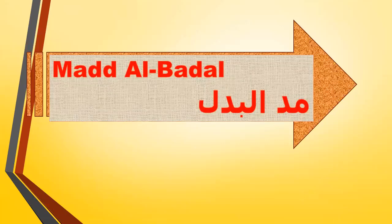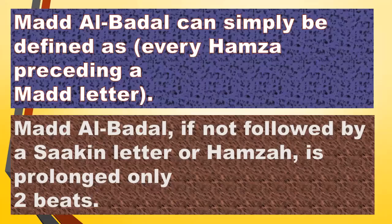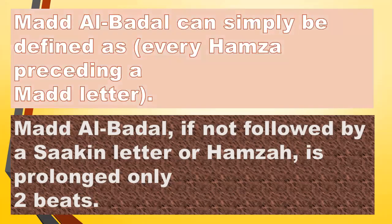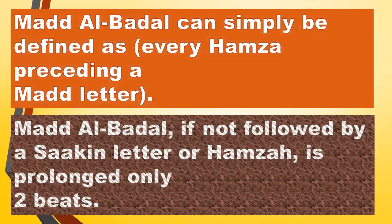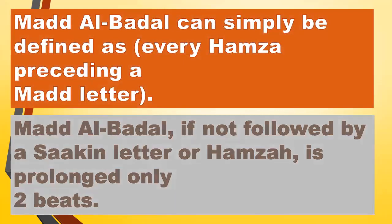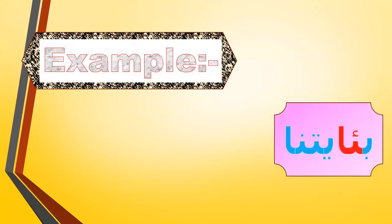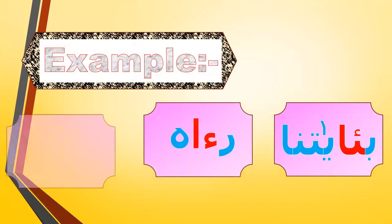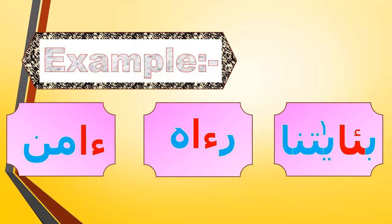Let's go to the last type of Madd today. It's Madd al-Badal. Madd al-Badal can simply be defined as every Hamza preceding a Madd letter. Madd al-Badal, if not followed by a second letter or Hamza, is prolonged only two beats. Examples: Be Ayatina, Rahu, Amana.